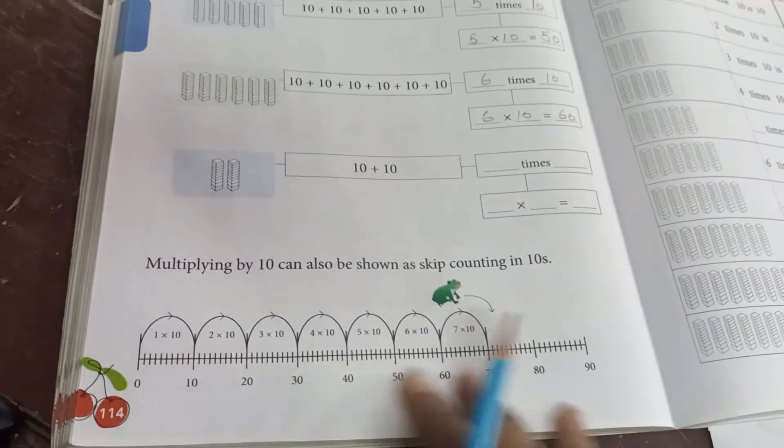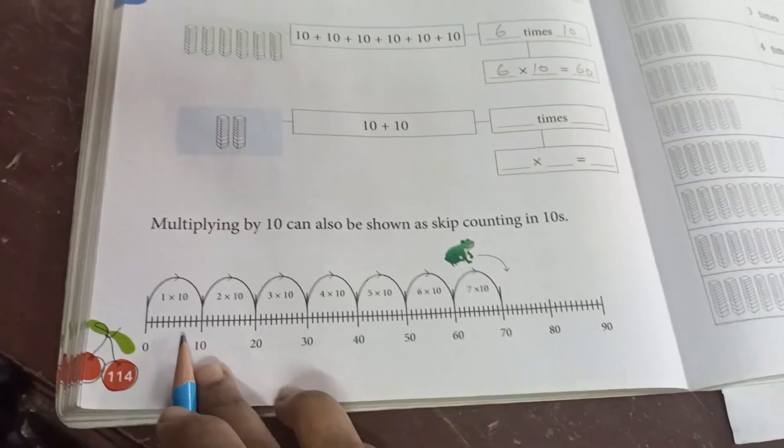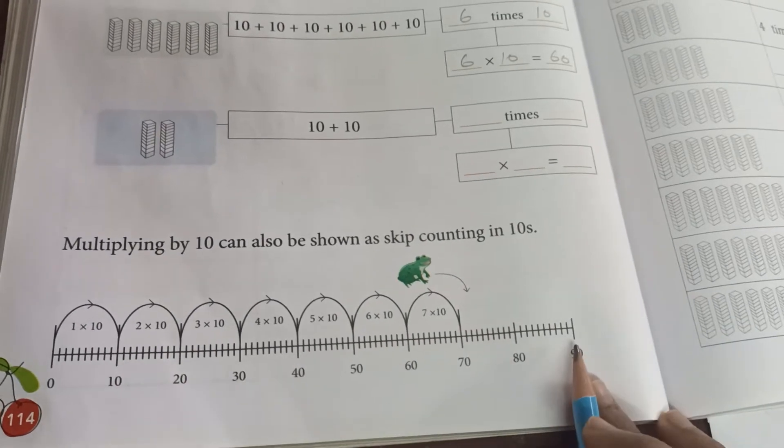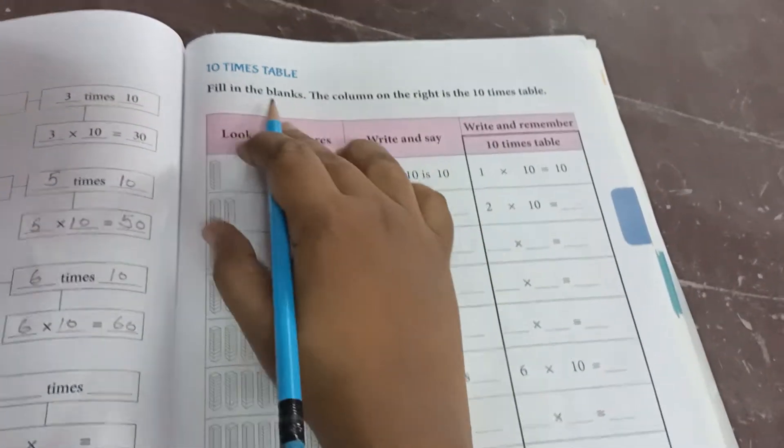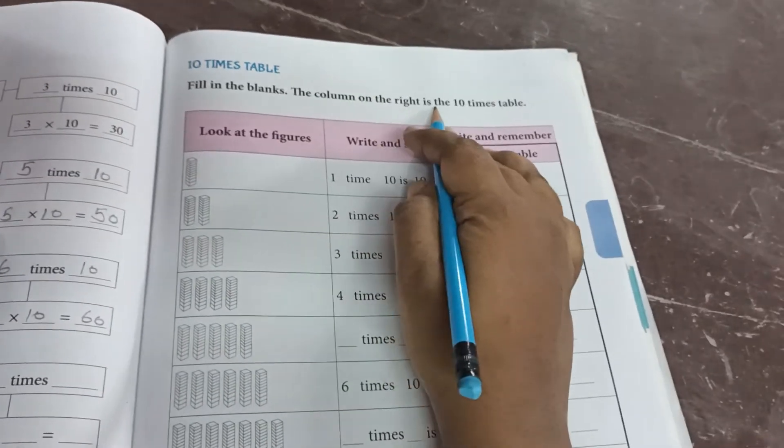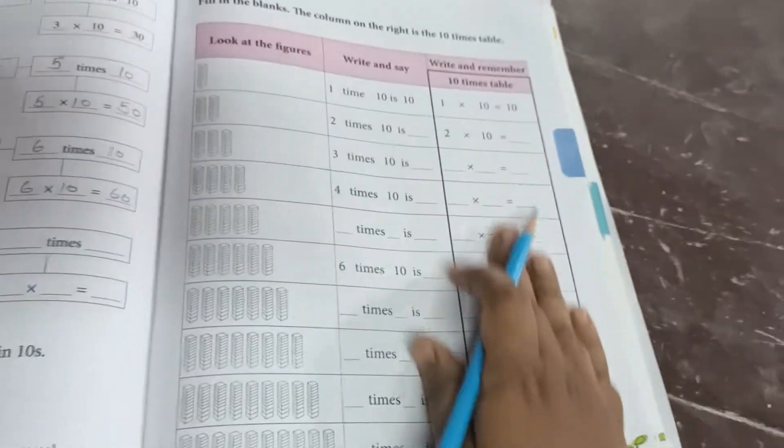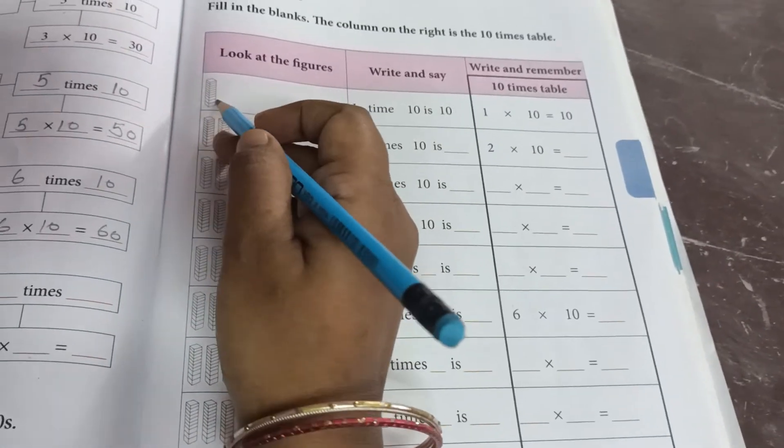Now here, just like we have skipping counting. Here we have done the same way. We have to leave 9 steps. And what do we have to do in 10 steps? We have to jump. So the same way, here we have to do skipping by 10 concept. Now we will see here, this is our table. Fill in the blanks. The column on the right is the 10 times table. Here on the right side is our 10 table. Now every block is 10 books.